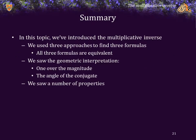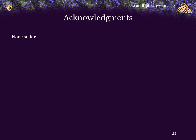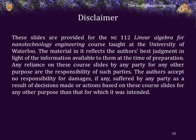In this topic, we've introduced the multiplicative inverse of a complex number. We've used three different approaches to find three different formulas, and all three formulas were found to be equivalent. We saw that the geometric interpretation of the multiplicative inverse was that complex number with 1 over the magnitude and the angle of the conjugate. Finally, we saw a number of properties of the multiplicative inverse. Here are some references, acknowledgements, the colophon, and a disclaimer. Cheers!